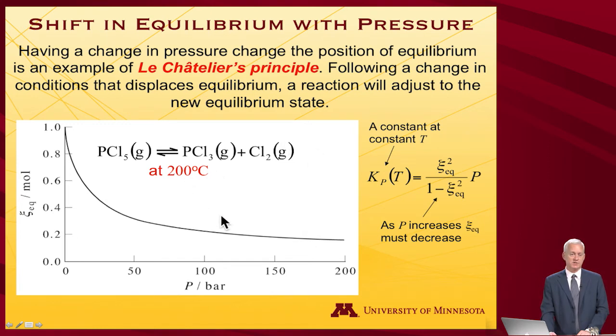And so here's the specific details of how the reaction we've been looking at thus far—phosphorus pentachloride going to phosphorus trichloride plus chlorine gas at 200 degrees Celsius—so we are going to keep it at a constant temperature, varies its reaction extent ξ as a function of pressure. So what do we know just looking at this?